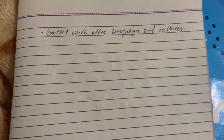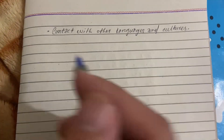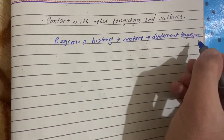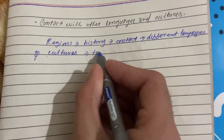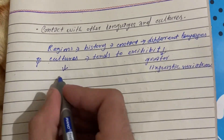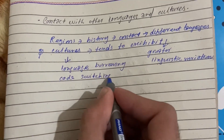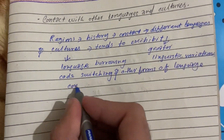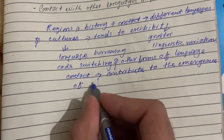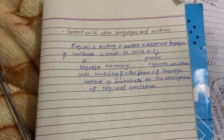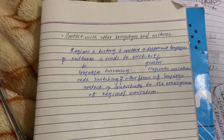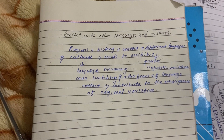Another factor is contact with other languages and cultures. Regions that have a history of contact with different languages and cultures tend to exhibit greater linguistic variation. Language borrowing, code-switching, and other forms of language contact can contribute to the emergence of regional variations. These were the three main factors that can influence regional or linguistic variation.